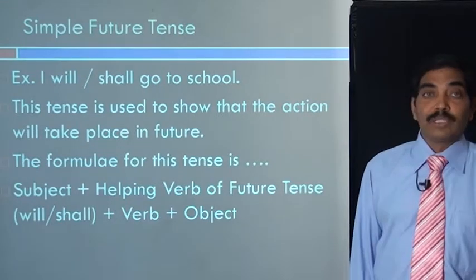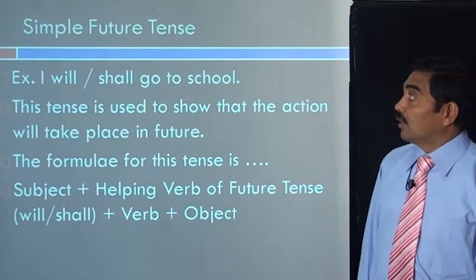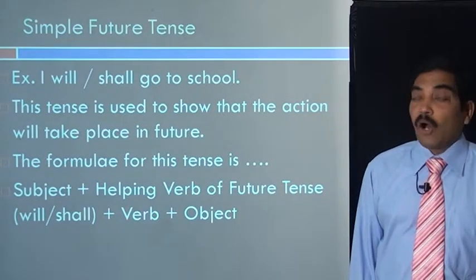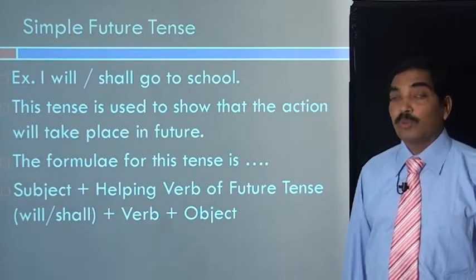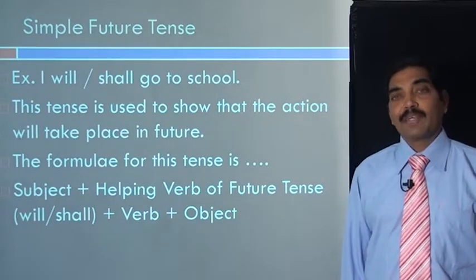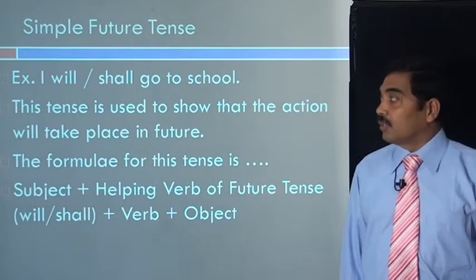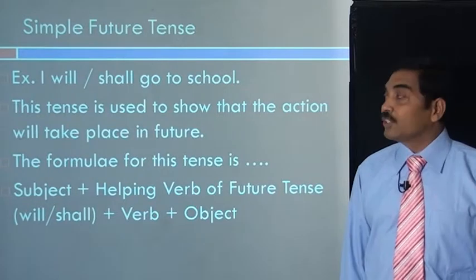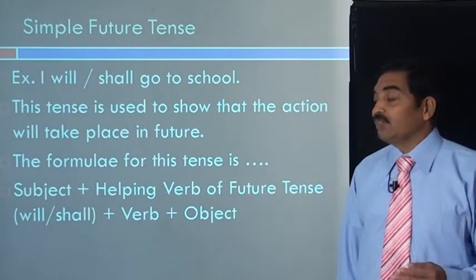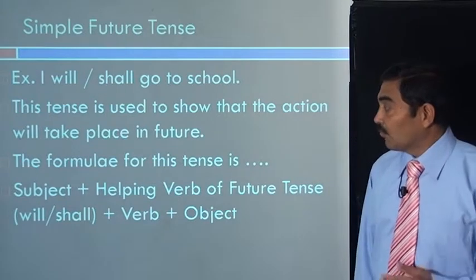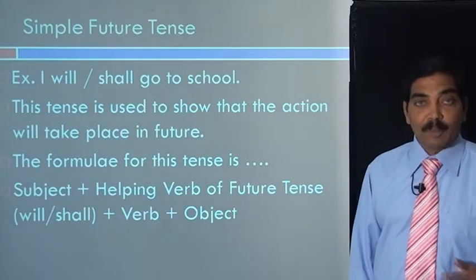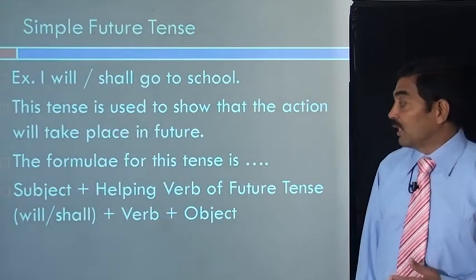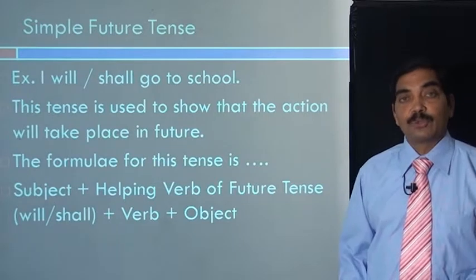Now let us go to the ninth form: simple future tense. Example: I will or shall go to school. We can use will or we can use shall — I will go to school or I shall go to school. This tense is used to show that the action will take place in future. The formula for this tense is subject — that is I — plus helping verb of future tense — that is will or shall — plus verb — that is go — plus object — that is to school.